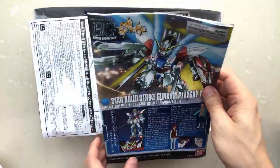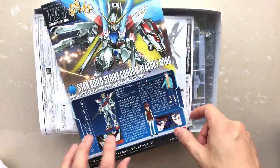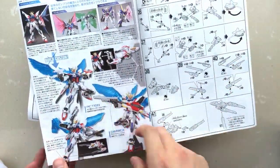So this is a special edition of the Build Strike. Plavsky Wing. So does it have these clear things on it? Yeah. It's got wings.